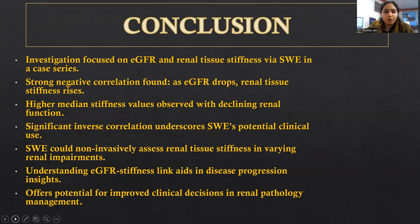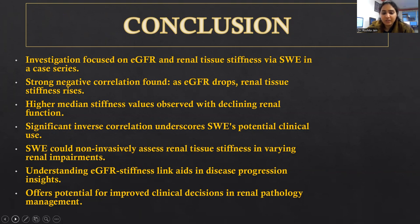Conclusion. The investigation focused on eGFR and renal tissue stiffness by shear wave elastography in a case series. A strong negative correlation was found: as eGFR dropped, renal tissue stiffness rose. Higher median stiffness values were observed with declining renal function. This significant inverse correlation underscores that shear wave elastography could non-invasively assess renal tissue stiffness in varying renal impairments, and understanding the eGFR-stiffness link aids disease progression insights, offering potential for improved clinical decisions in renal pathology management.